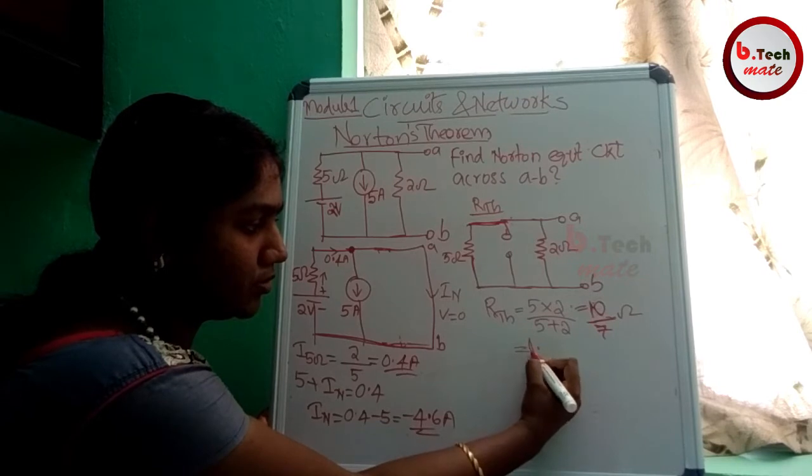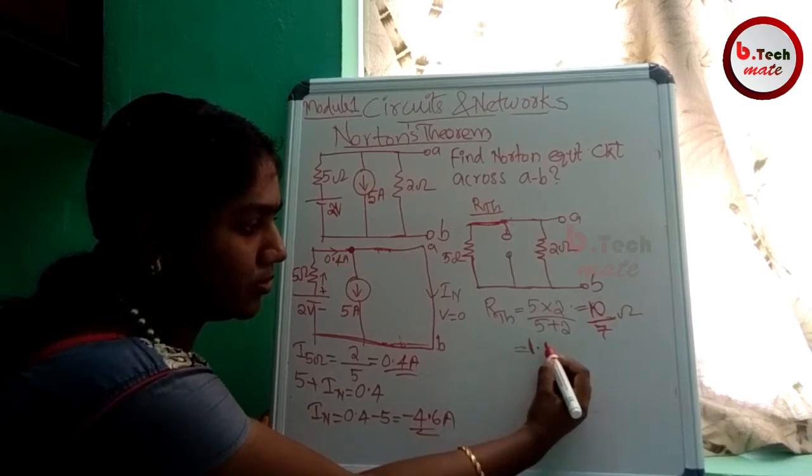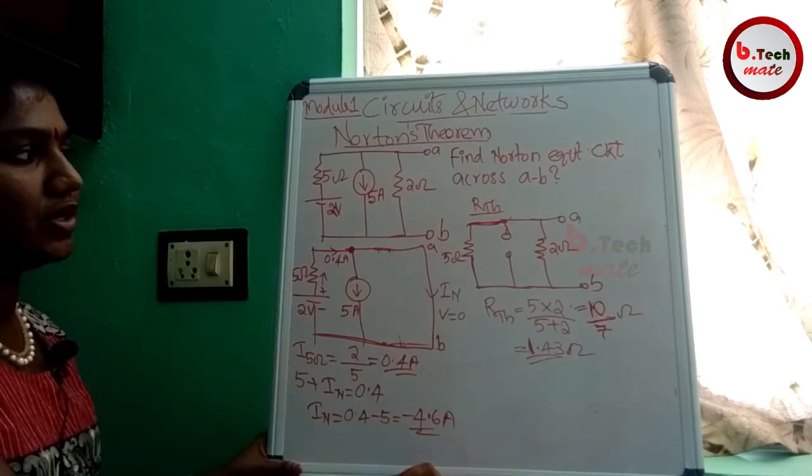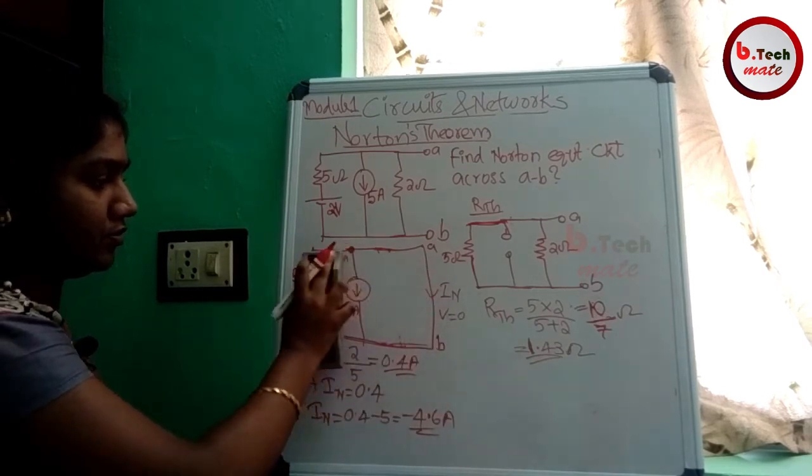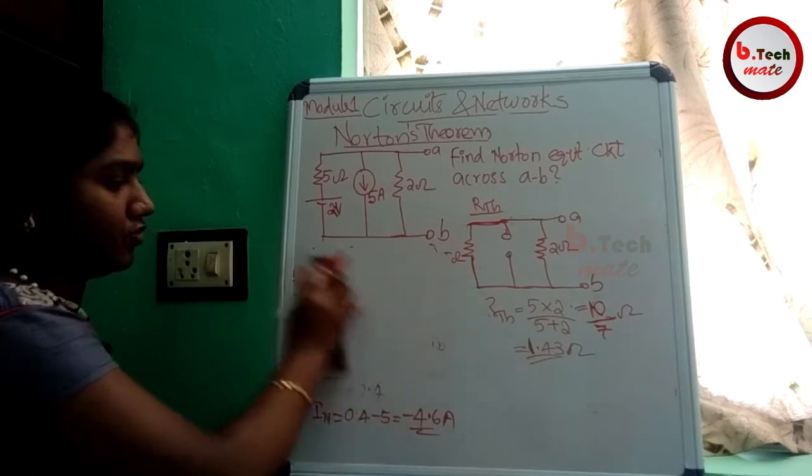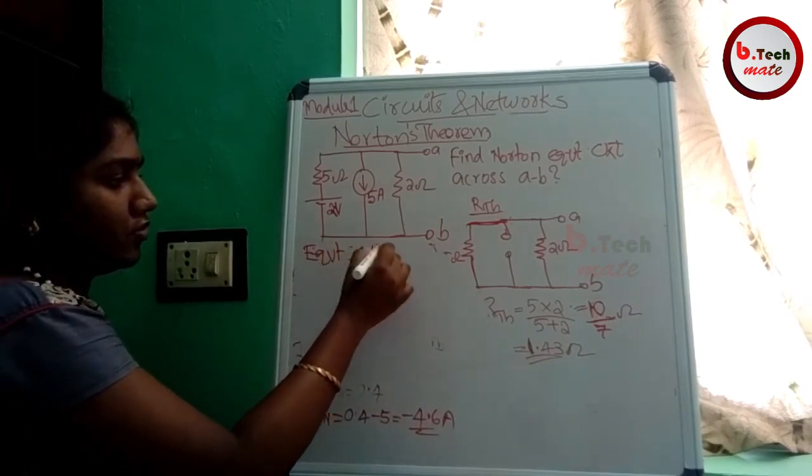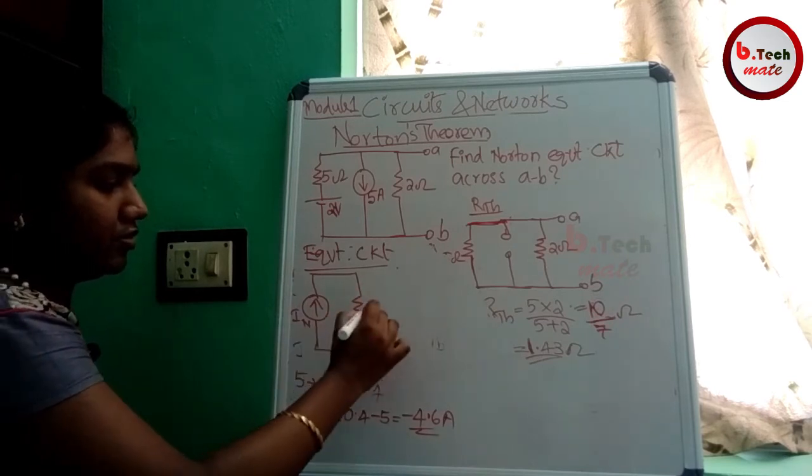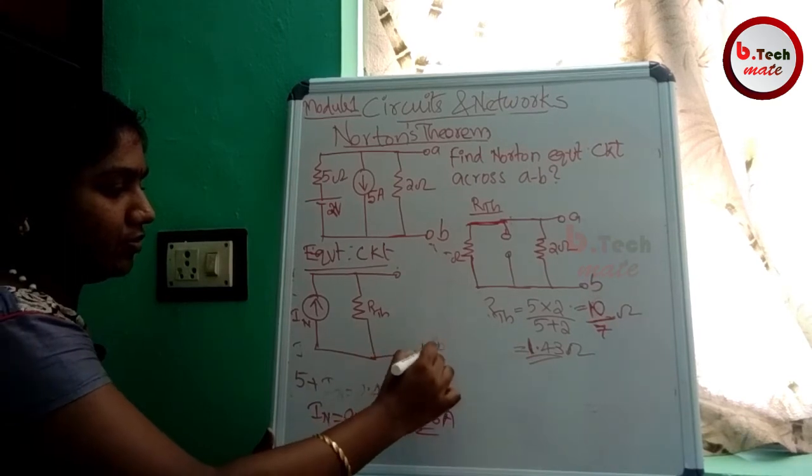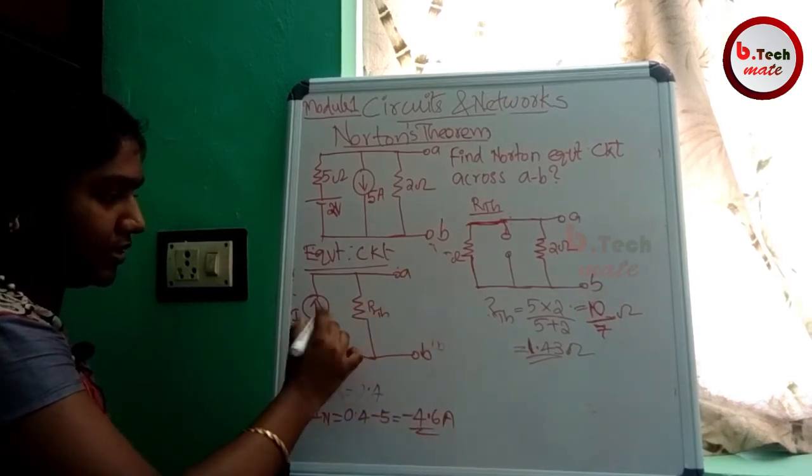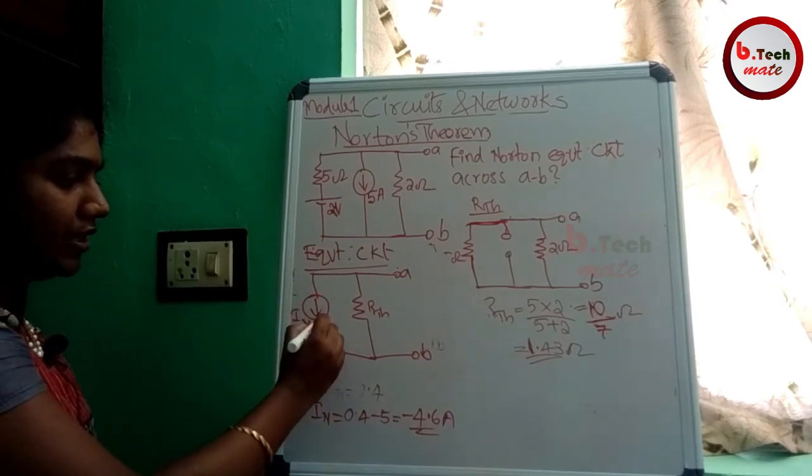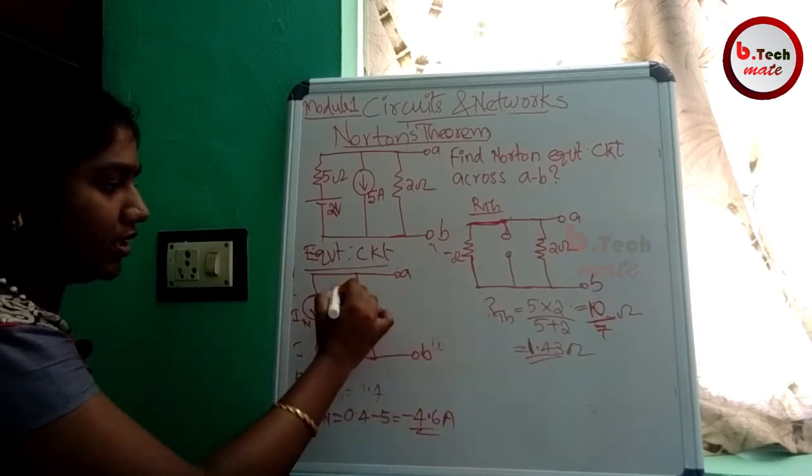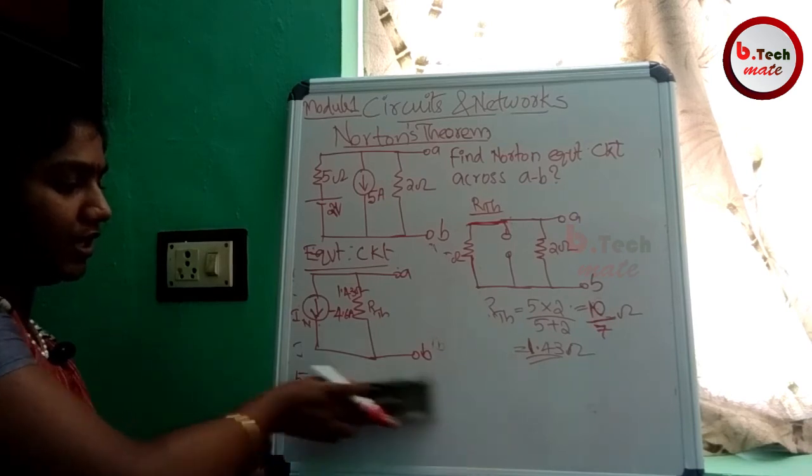10 by 7 ohms. One point four three something ohms. We have the Norton equivalent. In equals minus 4.6 amps, Rn equals 1.43 ohms. Now we have found the values.